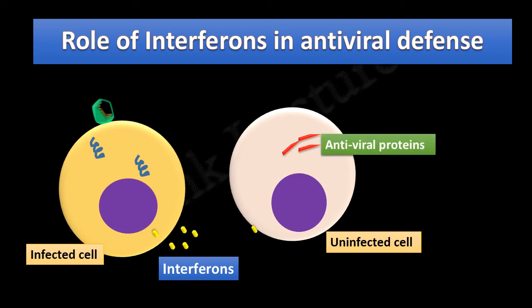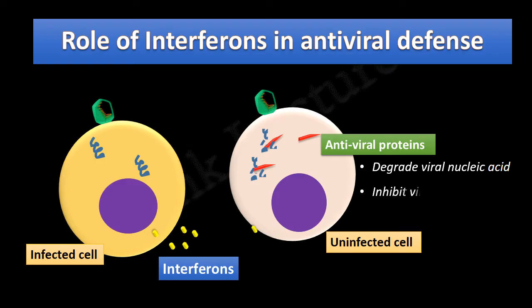Antiviral proteins remain inactive in these cells. But when a virus comes to infect the cell, these antiviral proteins become activated and they degrade the viral nucleic acid and also inhibit protein synthesis. Thus, antiviral proteins prevent the spread of viral infection. As for the cell which is already infected — interferons do not protect those cells. Instead, they are destroyed by natural killer cells and by apoptosis.